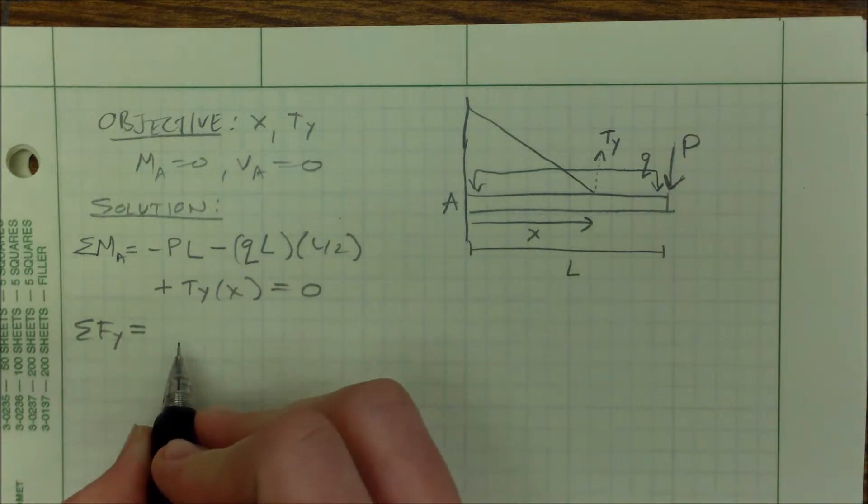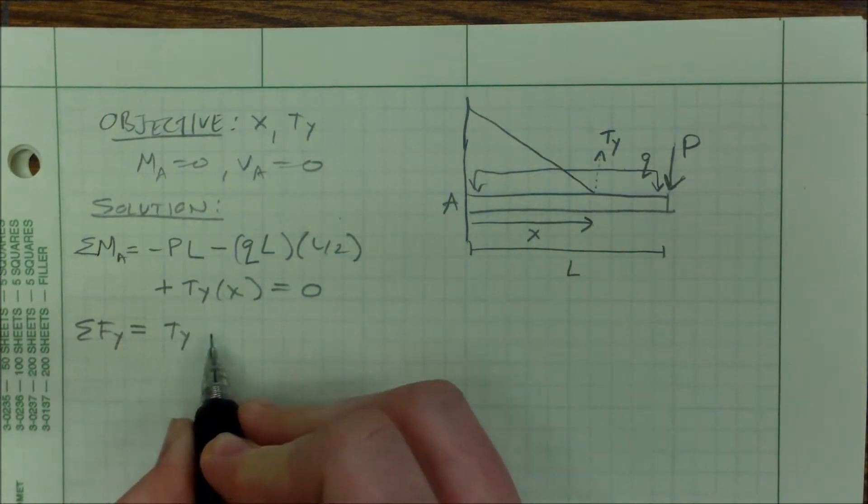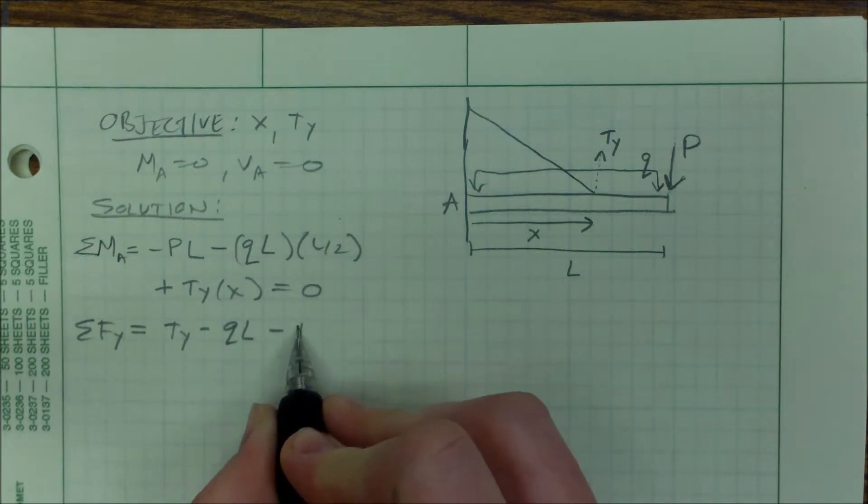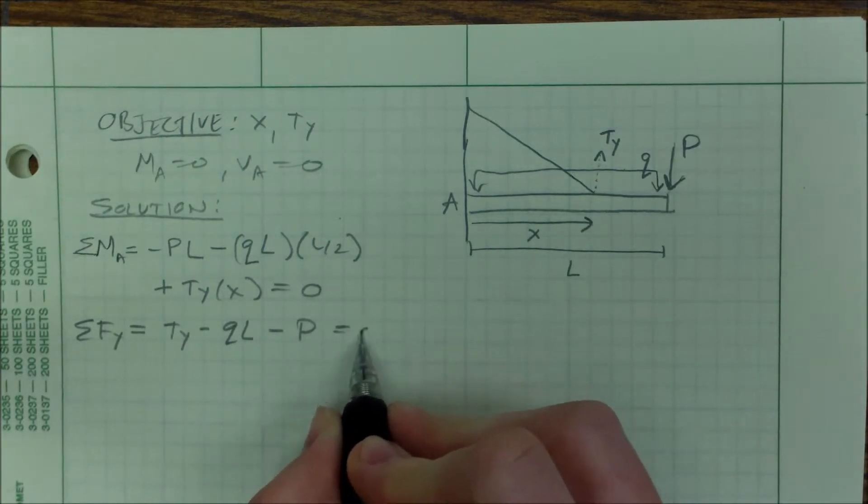Alright, sum of the forces in the Y direction, we get TY minus QL minus P equals zero.